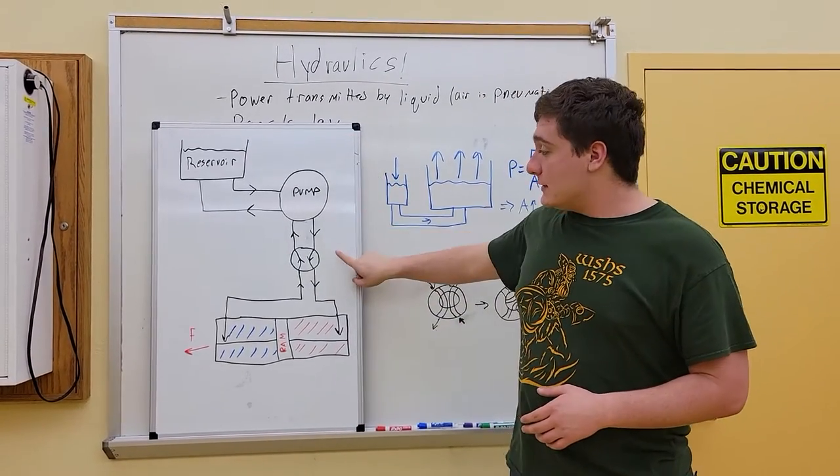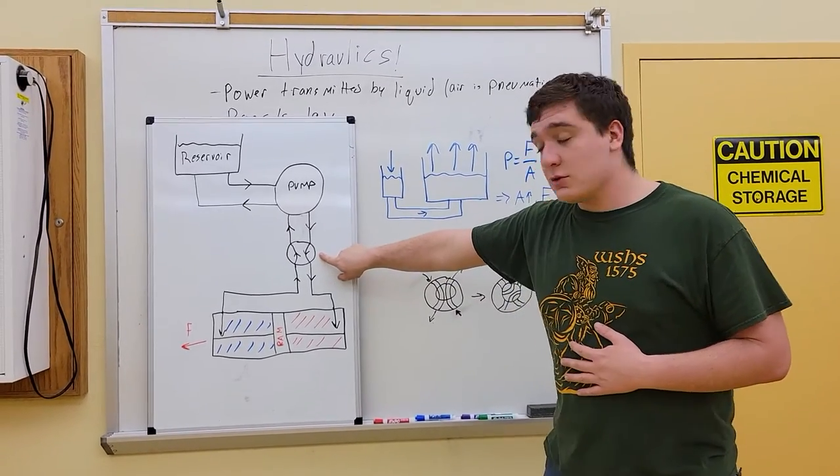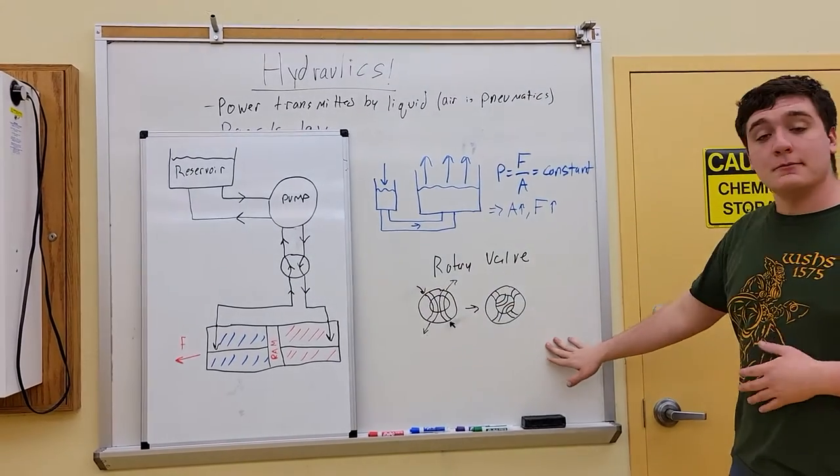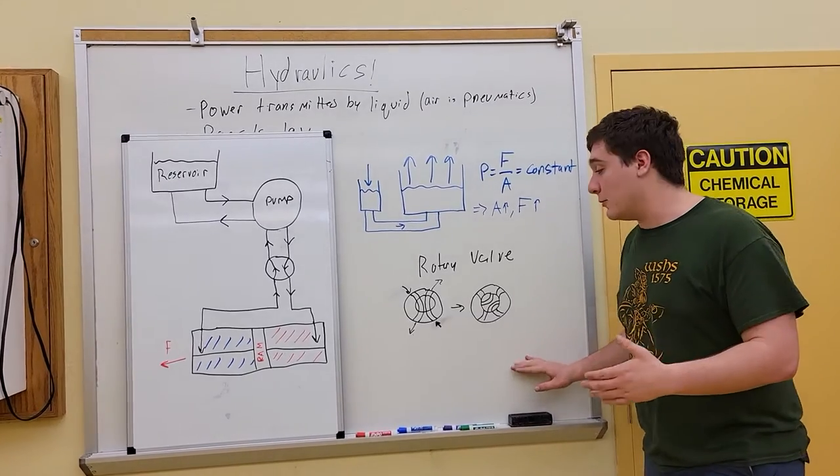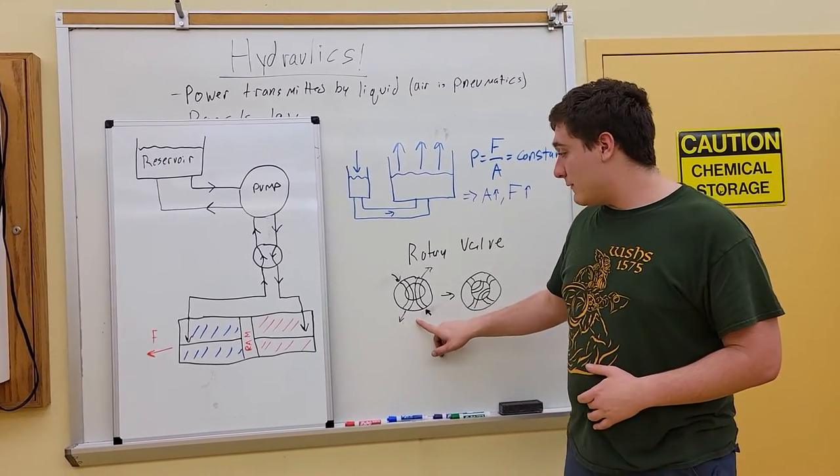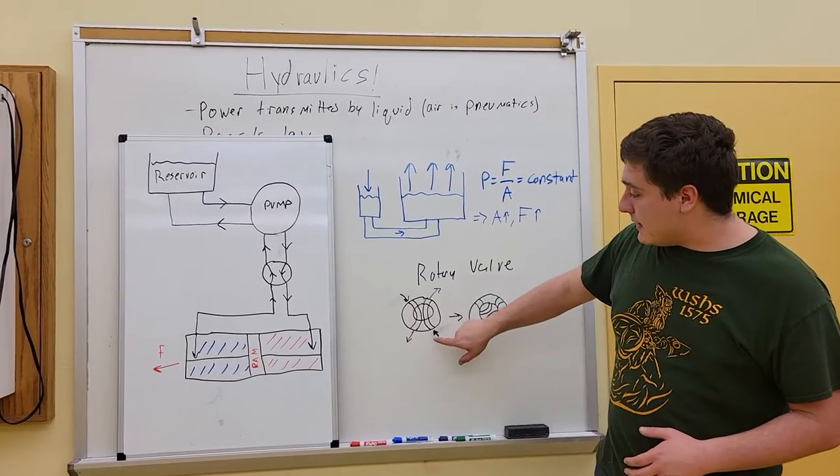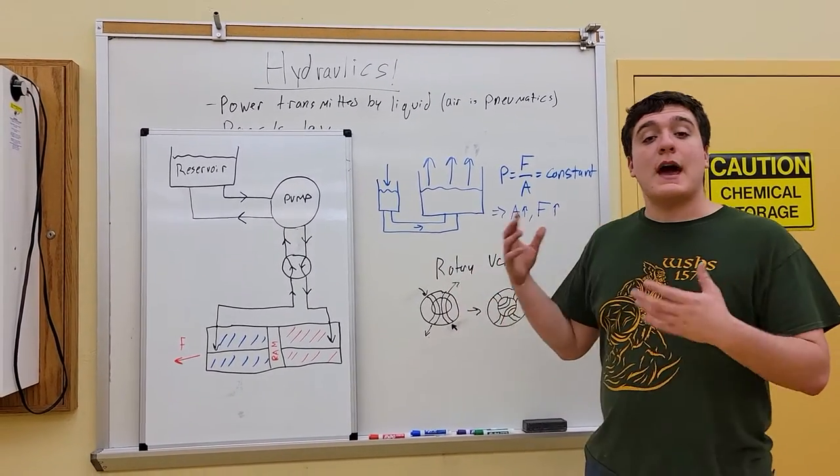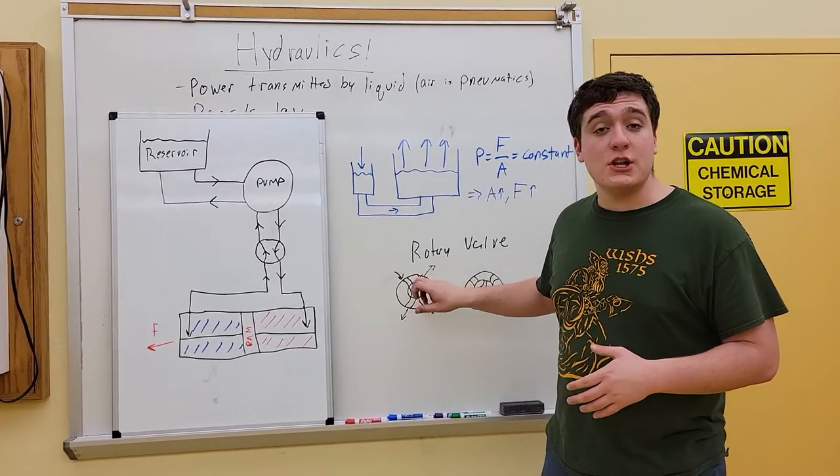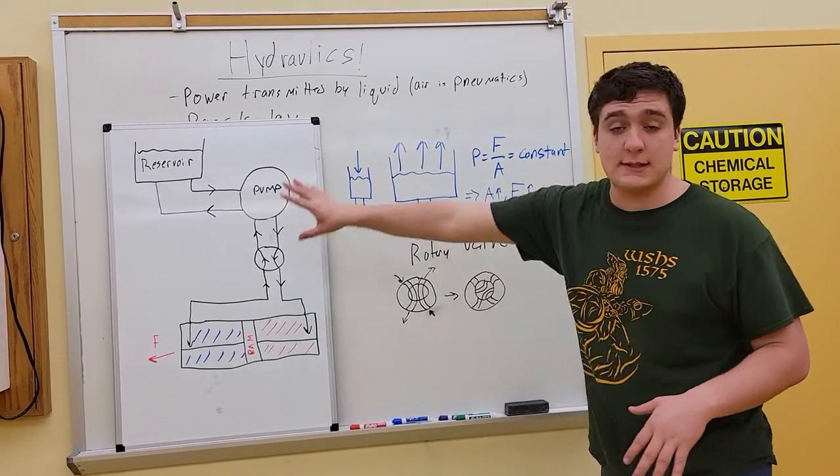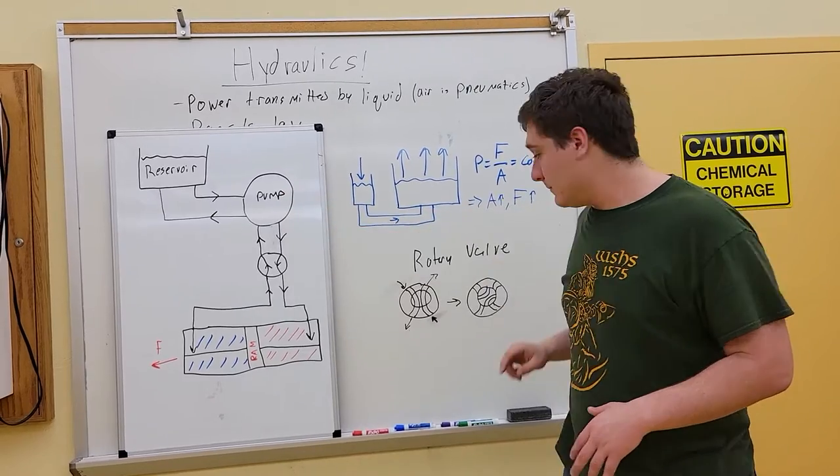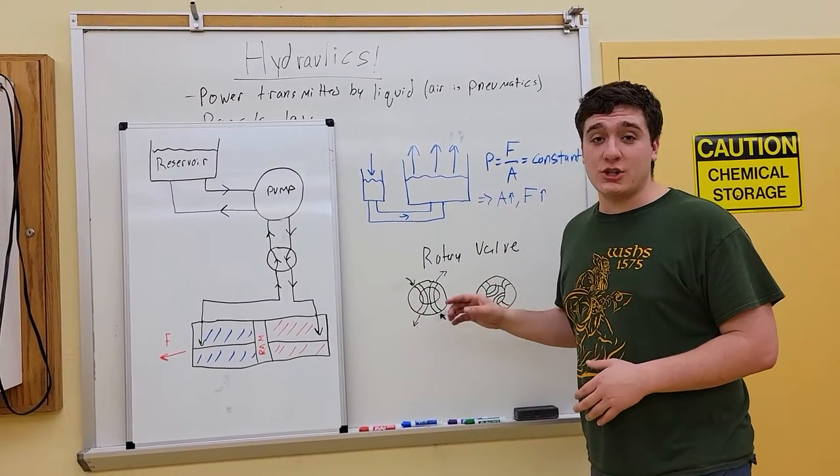Now as soon as we get an input, the directional control valve, which we see here, is going to rotate to accommodate that input. Now what we see here is a rotary valve in the same position as this one, where the fluid is flowing. Now as this moves, the centerpiece changes directions. It can cut off flow entirely, meaning that this system will not be doing anything, or it can change the direction of flow.